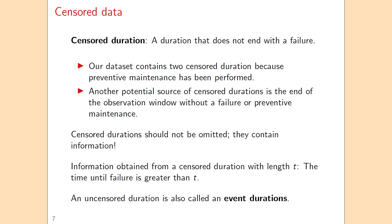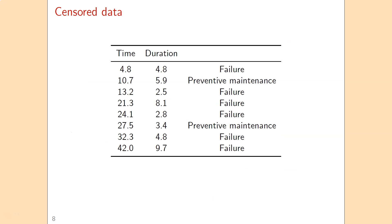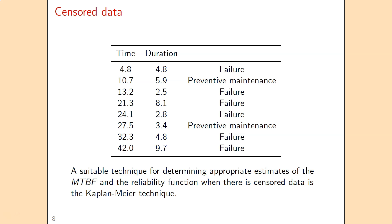If a duration is not censored, it is called an event duration. So we have two types of durations: event durations that end with a failure, and censored durations that end with preventive maintenance or end-of-observation. The next question is how we can estimate the mean time between failures and the reliability function when part of the data is censored. To do that, we use the Kaplan-Meier technique.